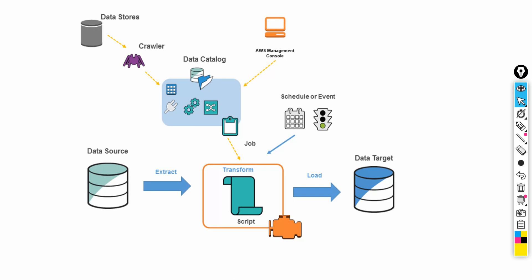Looking at the high-level architecture diagram of AWS Glue: the ETL flow shows that you have a data source — which can be a database or S3 — from which you extract the data. This is your Glue job, where you write whatever transformation logic you need, and then load the transformed data to a data target. That is one of the key features of AWS Glue — ETL using a Glue job.